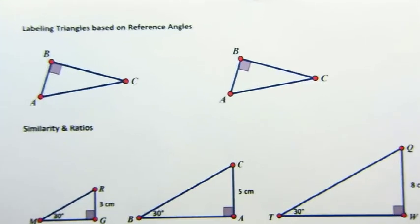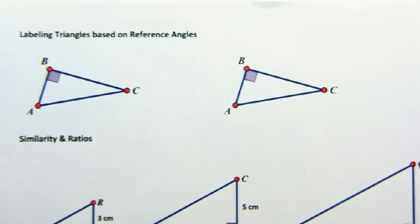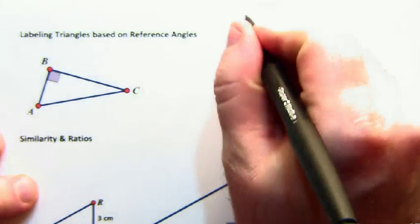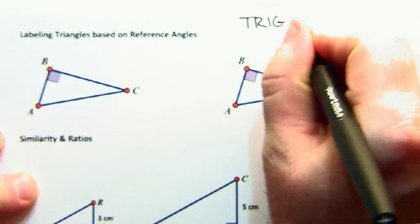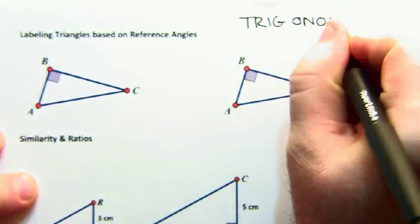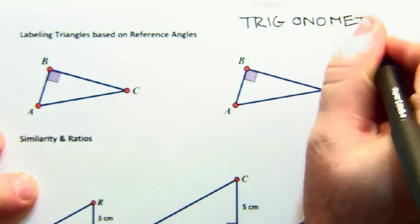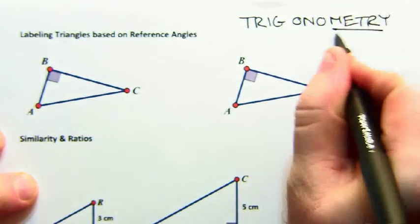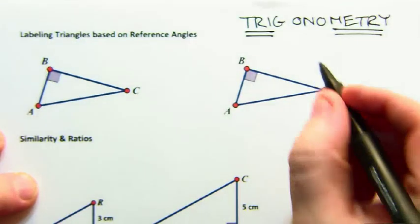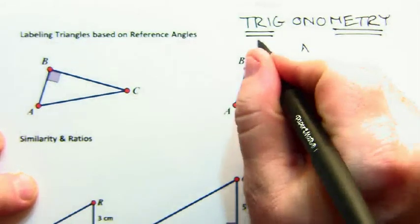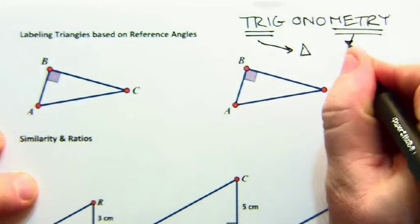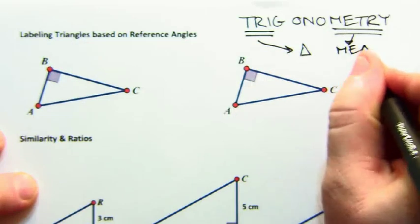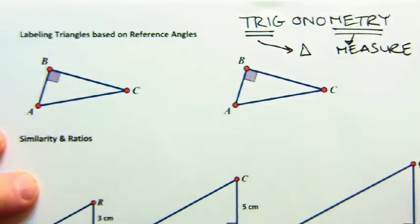Now some students hear the word trigonometry and find it fairly intimidating just like when we say calculus. But in the word trigonometry there's really two hidden words. This means triangle, tri-metry means measure. So really all this is is about all of the things about triangle measurements.